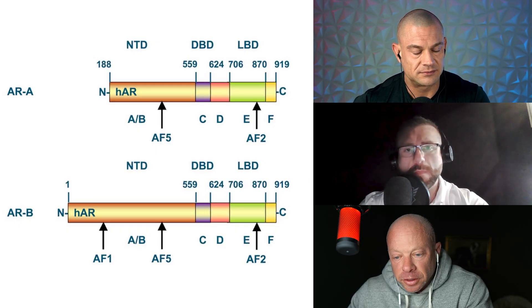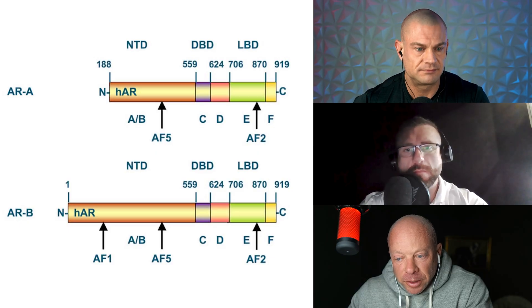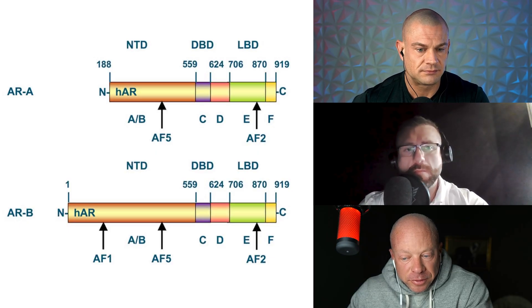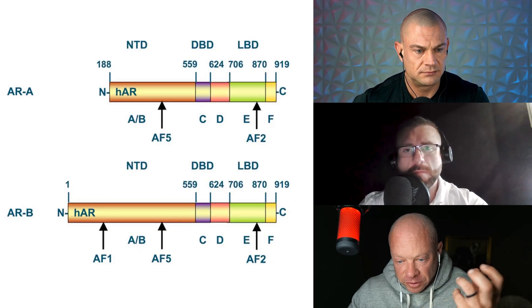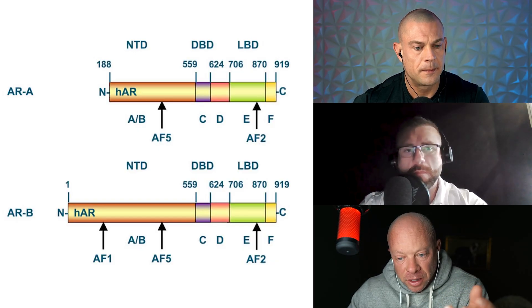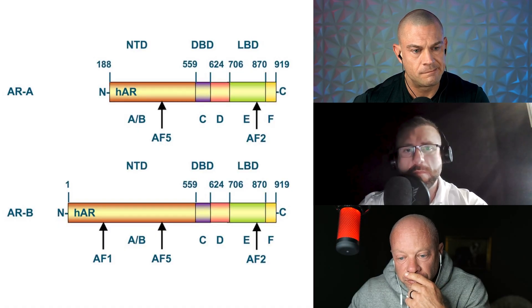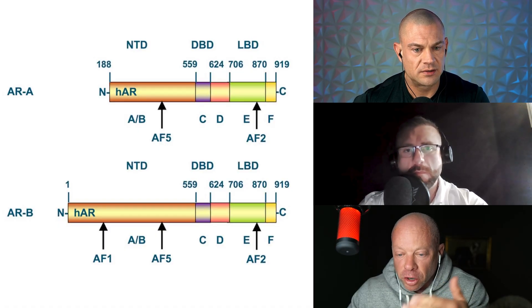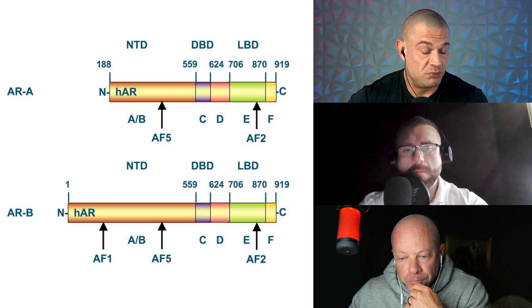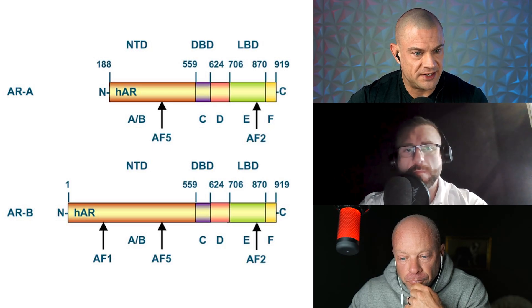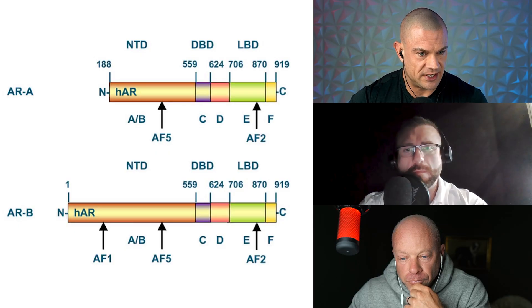I'm going to guess it's during translation or transcription, but it's very possible it's still occurring after the fact. Maybe it starts as an AR-B and it goes to the cell surface and something occurs to the cell and it cleaves off. And then it can no longer go in and generate androgen receptors anymore.